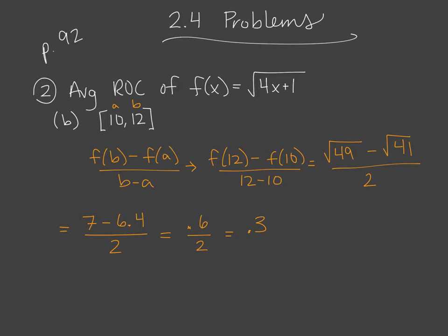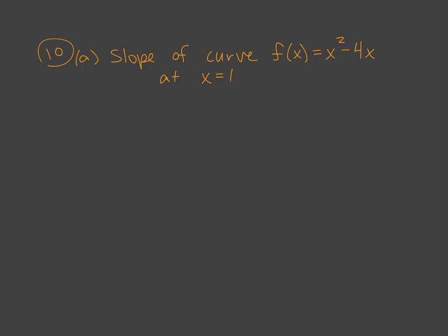If you actually look in the solutions manual that I've provided, the PDF online, they round further. They say it's 0.298. This is good. All right, number 10A is the next one I'll do. And this one has us finding the slope of the curve f of x equals x squared minus 4x at x equals 1.